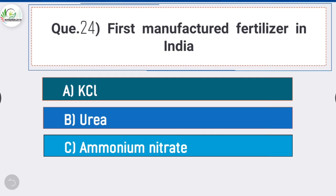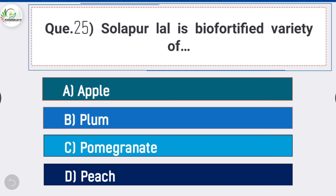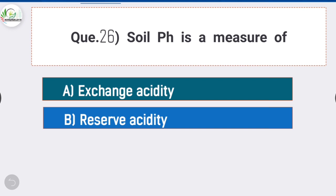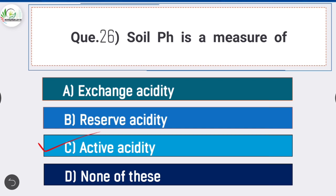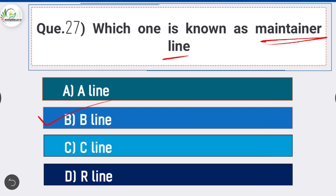Question number twenty-four: first manufactured fertilizer in India is - answer is option D - SSP. Single Super Phosphate is the first manufactured fertilizer in India. Question number twenty-five: Solapur Lal is a bio-fortified variety of - answer is option C - pomegranate. Question number twenty-seven: which one is known as maintainer line? Answer is option B - B line. B line is known as maintainer line.